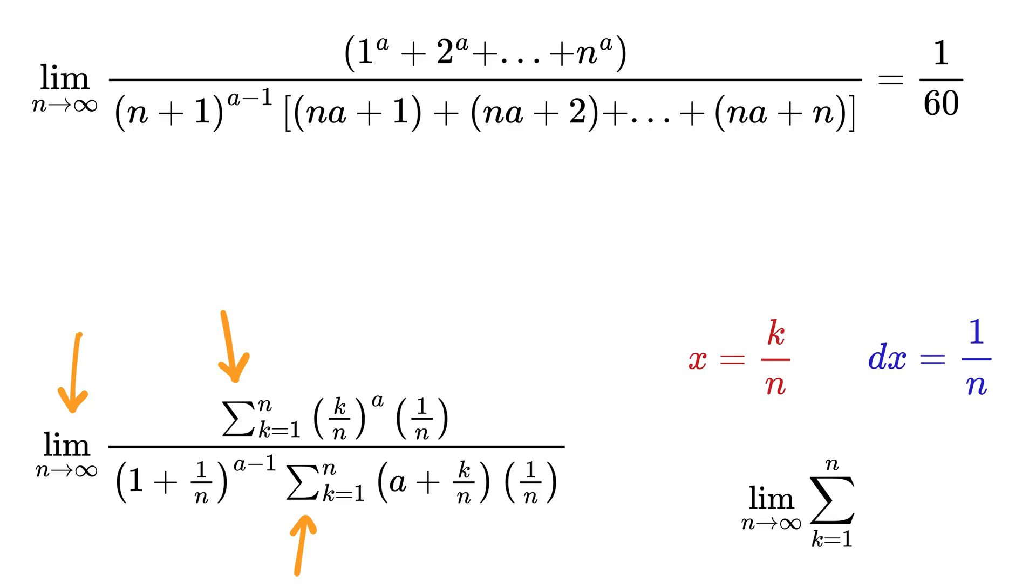Now here comes the magic. Substitute k by n as x, then 1 by n as dx, and limit n tends to infinity summation sign from k equals 1 to n as integral 0 to 1. This numerator will become integral 0 to 1 of x raised to a times dx.